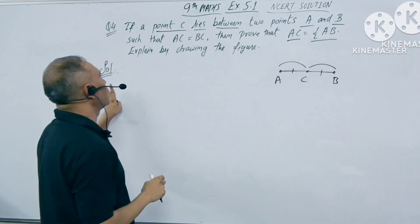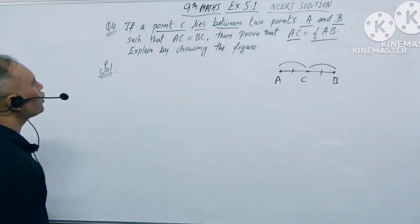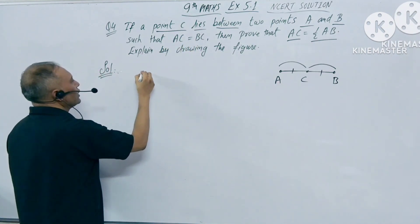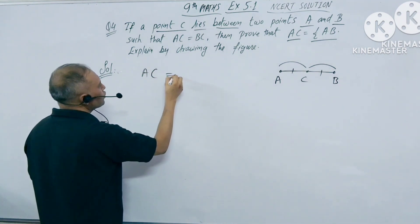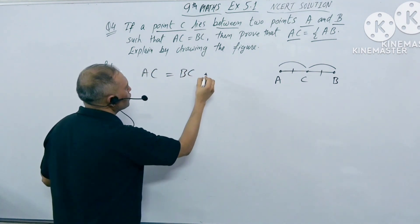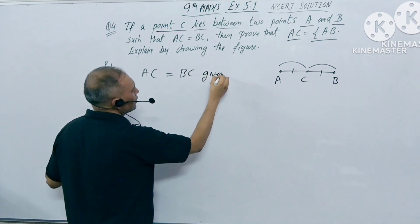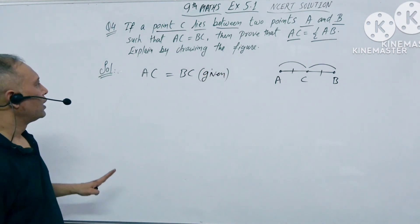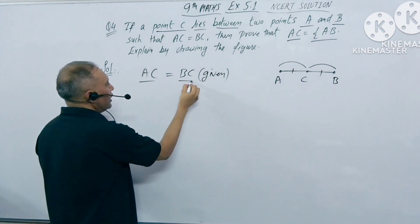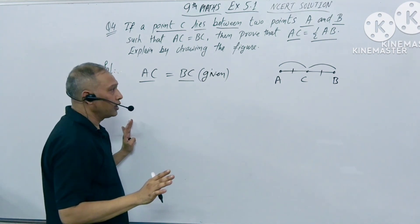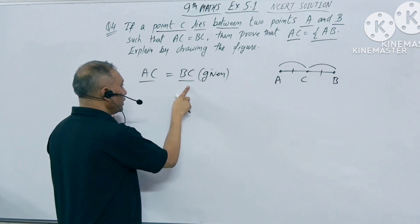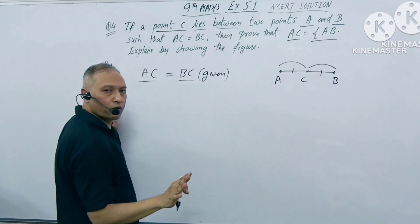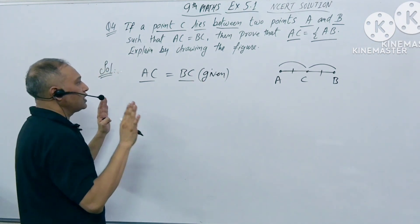Let's start the solution. We are given that AC equals BC. Now, how do we solve this? If two things are equal and we add equal things to those equal things, then the wholes will also be equal. We will solve this question using this concept.